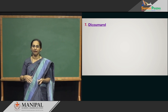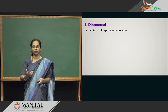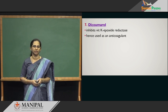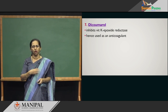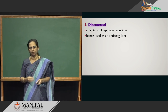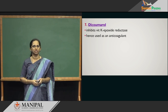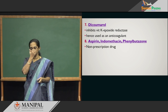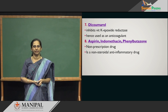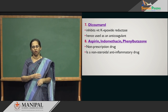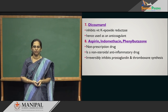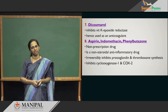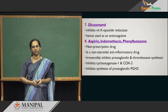Dicoumarol is an anti-clotting drug — it inhibits vitamin K epoxide reductase and is used as an anti-coagulant for people susceptible to stroke or those who had cardiac valve replacements. Aspirin, indomethacin, and phenylbutazone are NSAIDs — non-steroidal anti-inflammatory drugs. They inhibit prostaglandin synthase, specifically cyclooxygenase 1 and cyclooxygenase 2, bringing down prostaglandin production and stopping inflammation.